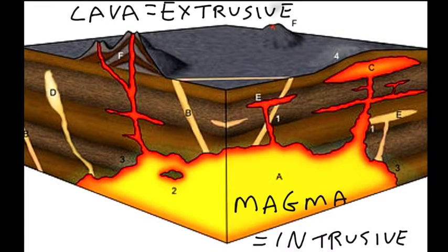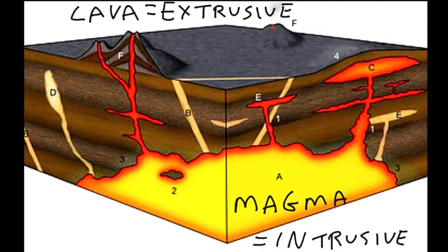As you can probably guess, igneous rock is formed from magma or lava. Magma and lava are really the same thing, except magma is what you call lava that hasn't erupted, and lava is magma that has erupted onto the surface.